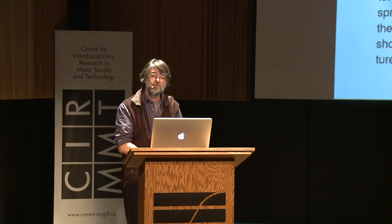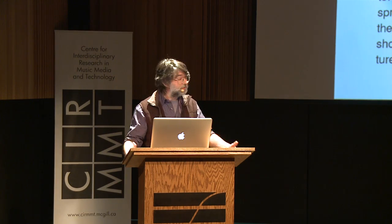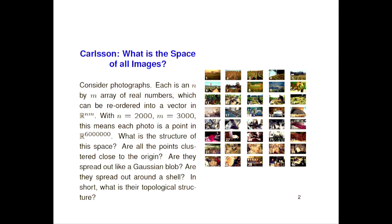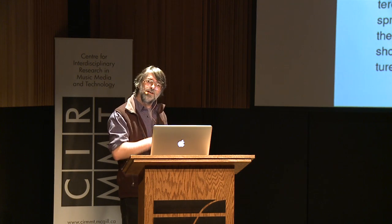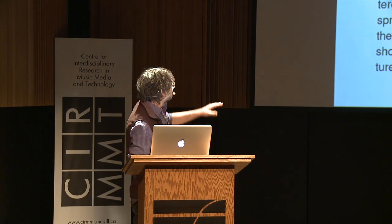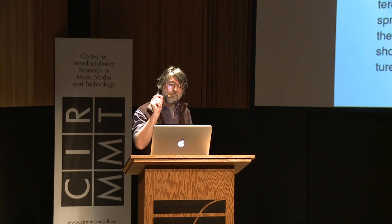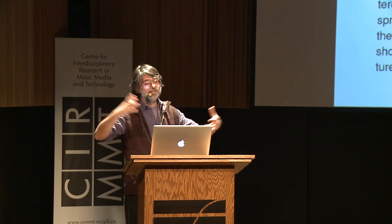Let me tell you what the image examples were, because they make things very clear. Think about a photograph — we all have computers with hundreds or thousands of photographs, and each of those photographs is a big array of numbers. A typical size might be a couple thousand by a couple thousand pixels, meaning something like 6 million numbers in that picture — or three times that for color. So each picture is a point in a big Euclidean space with 6 million dimensions.